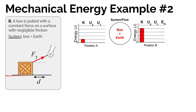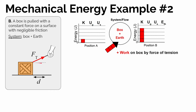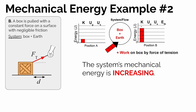If we say the box is at a height of zero and stays at a height of zero, there's no energy stored in the gravitational potential energy account. And if friction is negligible, there's no increase in thermal energy. The box gained kinetic energy from position A to position B because of the positive work done on the box by the force of tension — the box moved to the right and there is a component of the tension force to the right. So the system's mechanical energy is increasing because the kinetic energy is increasing.